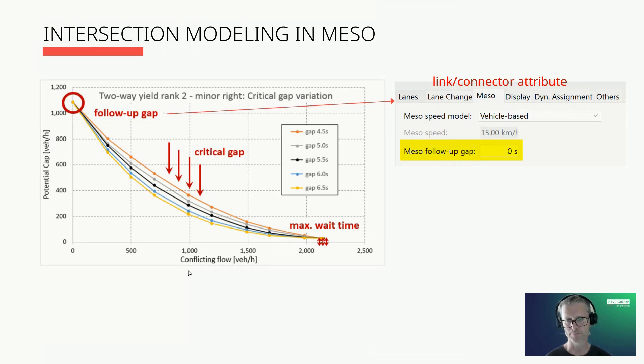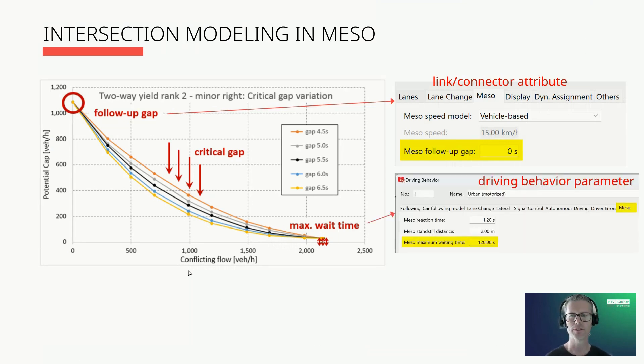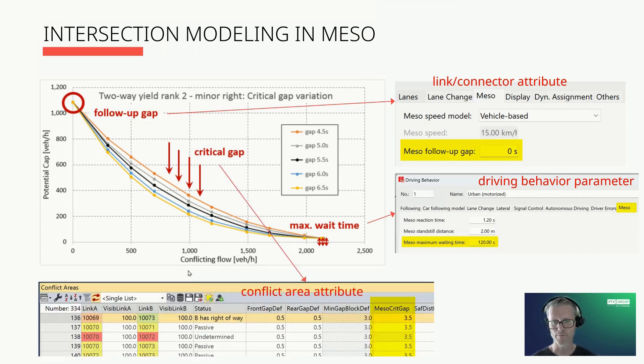The second one is maximum waiting time—period after which a vehicle waiting at the node entry enters the node from a minor flow direction even if the time gap in the major flow direction is too short. This way, a minimum number of vehicles of the minor flow direction can get to enter the node despite the heavy traffic in the major flow direction. The default here is 120 seconds. And now we have the critical gap. The meso critical gap defines the temporal distance between two successive vehicles in the major flow that a vehicle in a minor flow needs to enter the node.